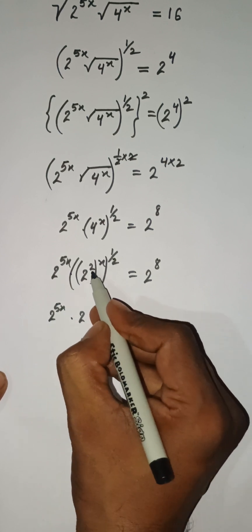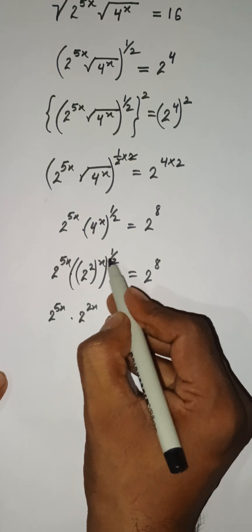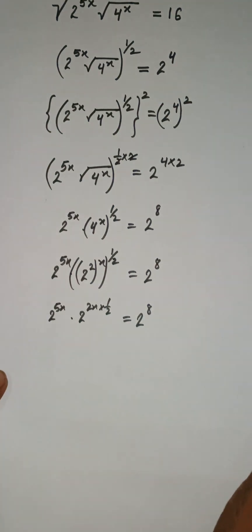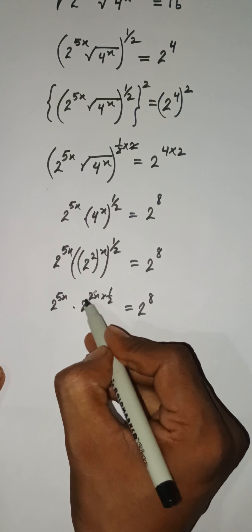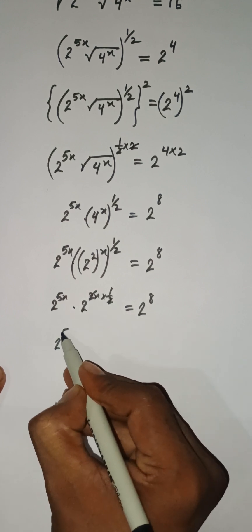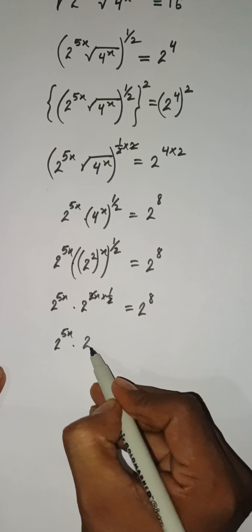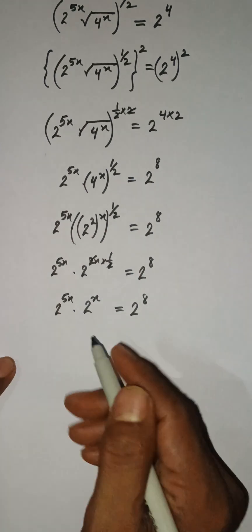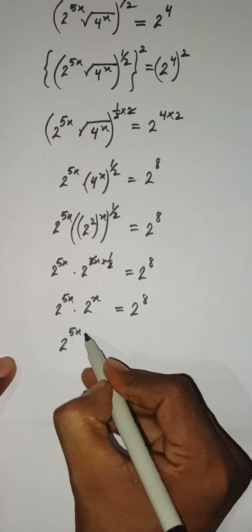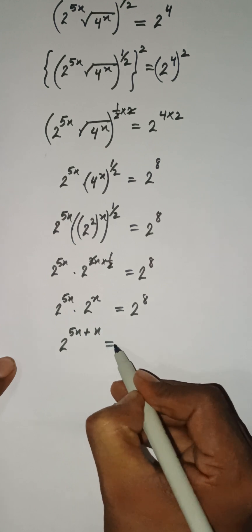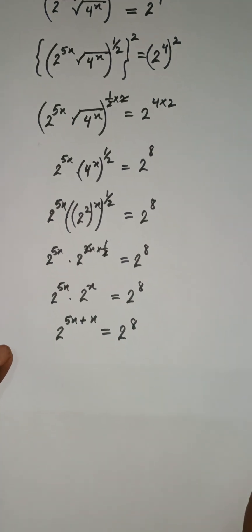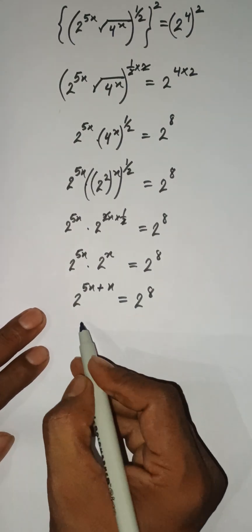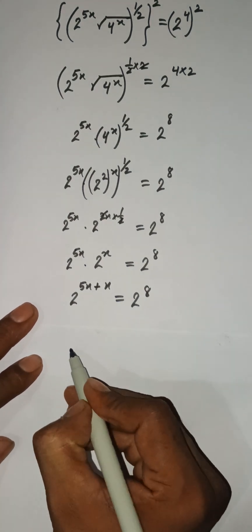Now we have 2 to the power 5x multiplied by 2 to the power 2 times x times 1 by 2, equal to 2 to the power 8. The 2s cancel, giving 2 to the power 5x times 2 to the power x equals 2 to the power 8. Combining, we get 2 to the power 5x plus x equals 2 to the power 8.